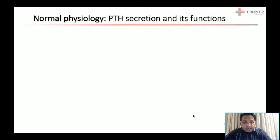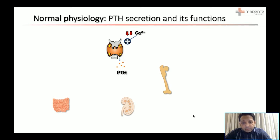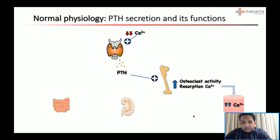Let's have a recap on the normal physiology of the parathyroid gland and parathyroid hormone, which is secreted by the parathyroid glands in response to decreased calcium levels in the blood. This parathyroid hormone is meant to maintain homeostasis of calcium and phosphate levels. It acts at three organs — it stimulates osteoclastic activity at the bones, increasing resorption of calcium and raising calcium levels in the blood. In the kidneys, it decreases excretion and increases absorption of calcium, again leading to increased calcium levels.